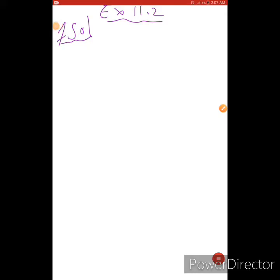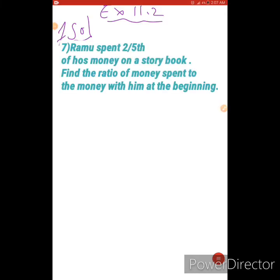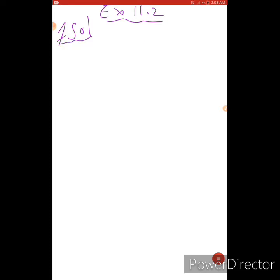Problem 7. The question is Ramu spent 2 by 5th of his money on a story book. Find the ratio of money spent to the money with him at the beginning. We don't know how much of the Ramu is having, but Ramu has spent 2 by 5th of his money.